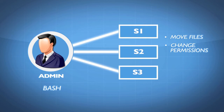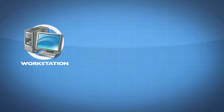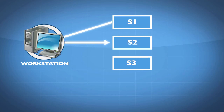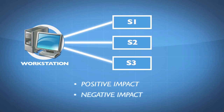When you are affecting multiple servers from your client workstation, you can do two things. You can have a positive impact on the servers — in other words, you did what you were supposed to do. Or you can have a negative impact on your servers, which means that you messed a lot of things up really fast.